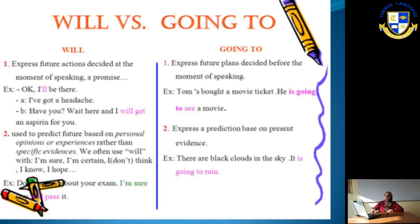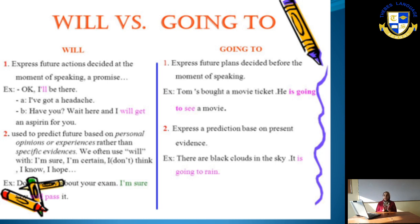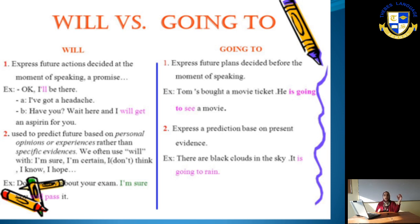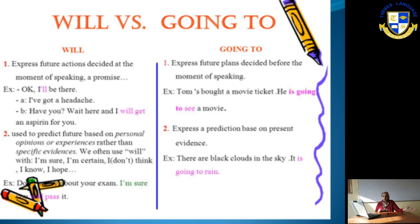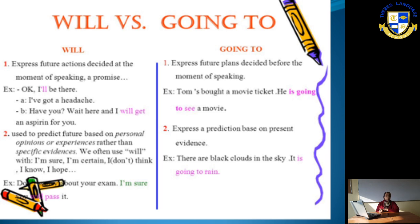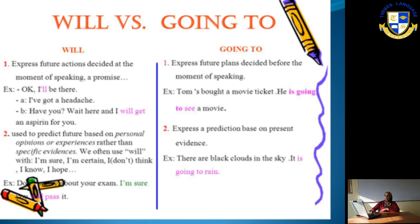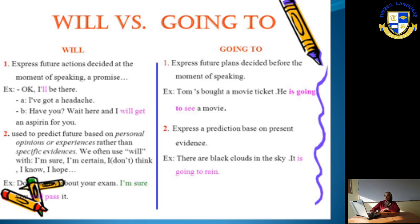Number two: 'going to' also expresses a prediction based on present evidence — you have a clue or evidence for your prediction. For example: 'He is going to be a doctor because he is in a medicine school.' Or: 'There are black clouds in the sky — it is going to rain.' You are predicting based on evidence.